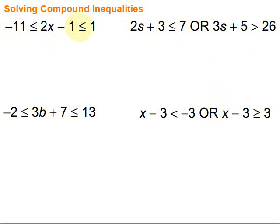We often don't see the AND written out with the word AND — it's often written like this with three pieces. So we have negative 11 is less than or equal to 2x minus 1, which is less than or equal to 1. Let's take a look at how we can solve that. One way is to focus on a piece at a time. We could look at the negative 11 is less than or equal to 2x minus 1 and solve that.